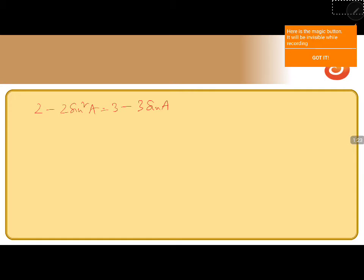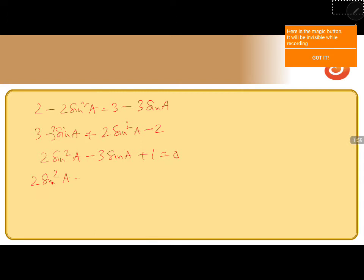Bring the left-hand side to the right-hand side: 3 minus 3 sin a is equal to 2 sin square a minus 2. So 2 sin square a minus 3 sin a plus 1 equals 0. It is a quadratic in sin a. Let us factorize: 2 sin a minus 1, times sin a minus 1, equals 0.